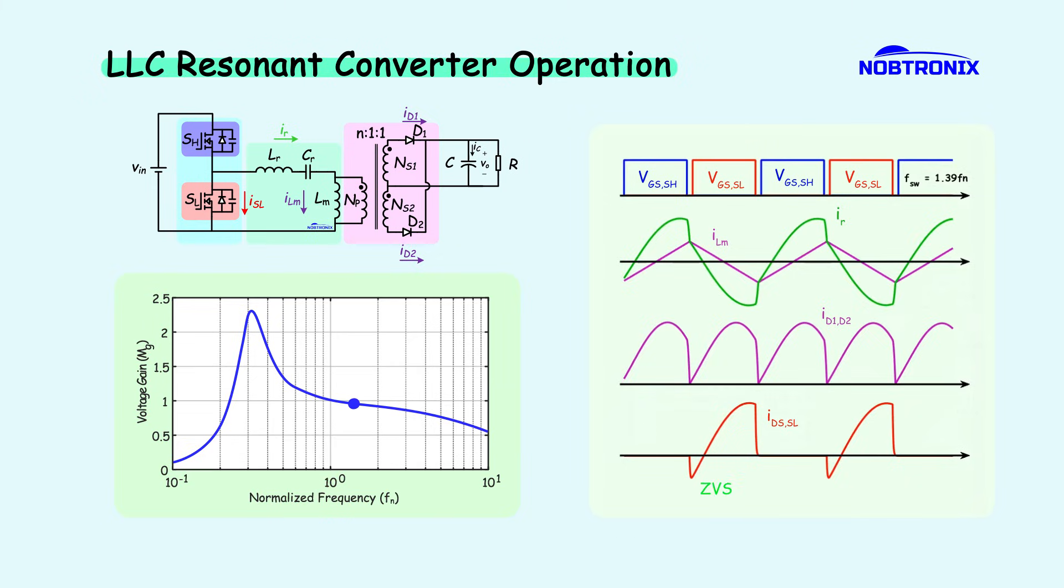At this point, the MOSFET current is negative when turning on, indicating soft switching. However, the diode currents show that the diodes undergo hard switching, leading to reverse recovery losses. As the switching frequency decreases toward the resonance frequency, the current waveforms become more sinusoidal.